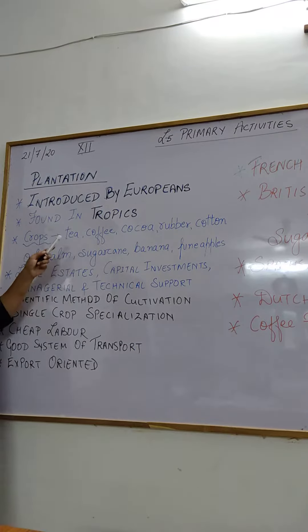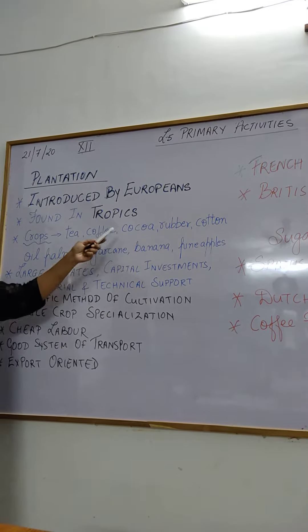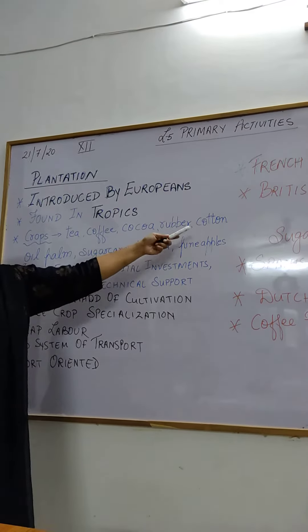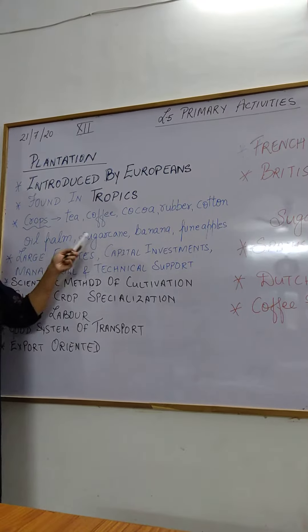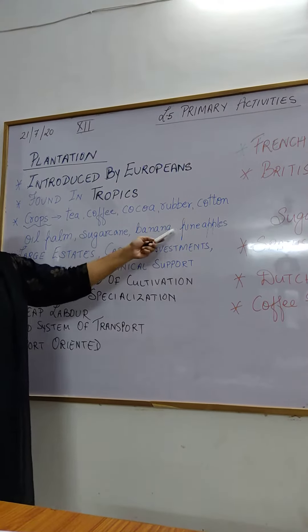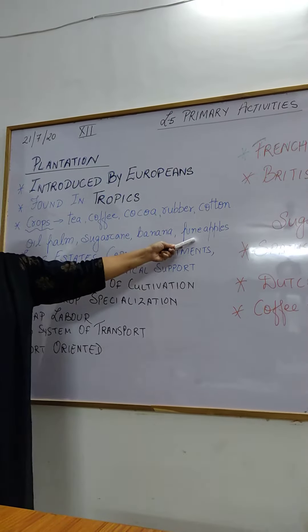Now the crops grown in plantations were tea, coffee, cocoa, rubber, cotton, oil palm, sugar cane, banana, and pineapples.